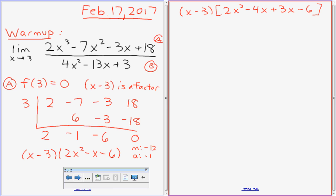It's 12 and negative 12. Good, what are those two numbers? Negative 3 and negative 4. Good. So it's going to be x minus 3, 2x squared minus 4x plus 3x minus 6. Just so you know, you will be required to factor using M and A on your test. You'll also be required to use the quadratic formula.